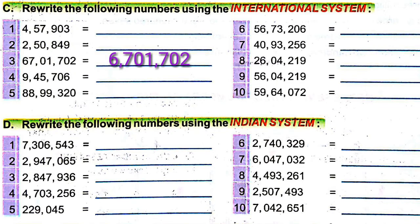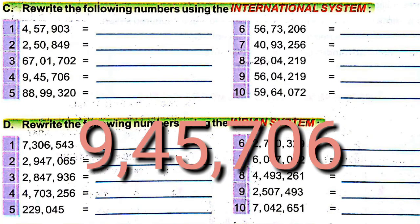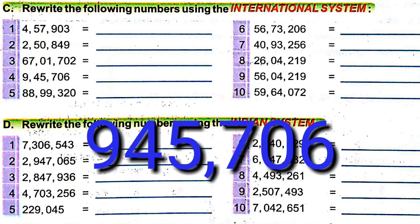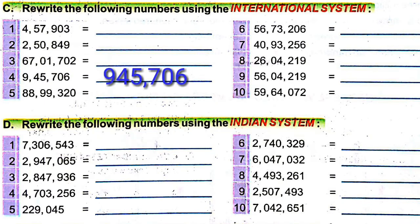The next number — the given number is 9,45,706. We will write that in the international system. There are six digits, so we will give a comma before three digits, that is between 5 and 7. So the number is 945,706.